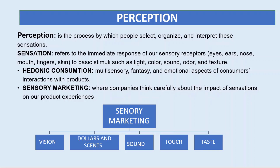Sensory marketing: marketers benefit from the sensation of the senses to reach customers. There are five main human senses used in sensory marketing: vision, smell and scent, sound, touch, and taste. First, vision — marketers rely heavily on visual elements such as colors and packaging of products.